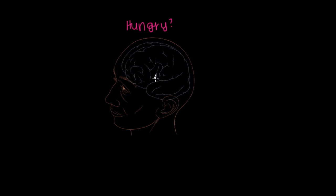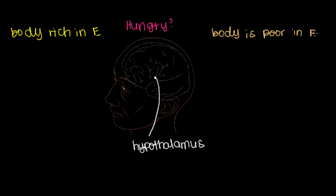The part of your brain that determines whether you're hungry or not is called the hypothalamus. Your hypothalamus helps make the distinction if your body is rich in energy or if your body is poor in energy. Or in other words, are you hungry or are you full?